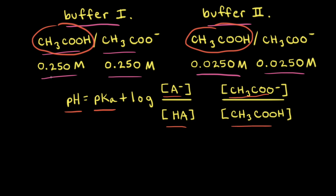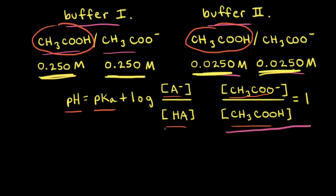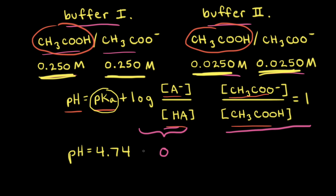For buffer solution number 1, the concentration of the acetate anion is equal to the concentration of acetic acid, therefore the ratio of their concentrations is equal to 1. The same idea applies for buffer solution number 2. Since the ratio of the concentrations is equal to 1, the log of 1 is equal to 0, and the pKa value of acetic acid at 25 degrees Celsius is equal to 4.74. So the pH of both buffer solutions is equal to 4.74.